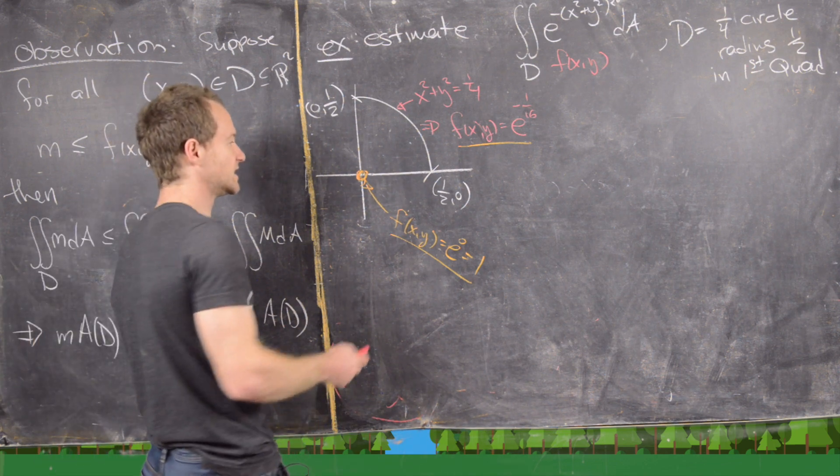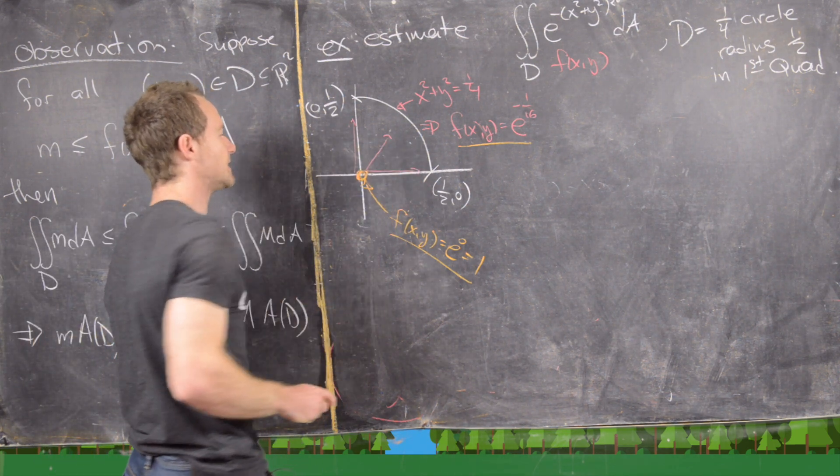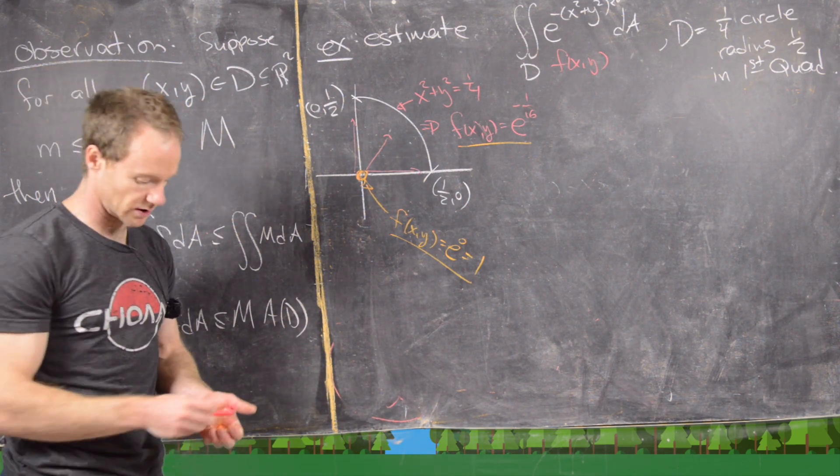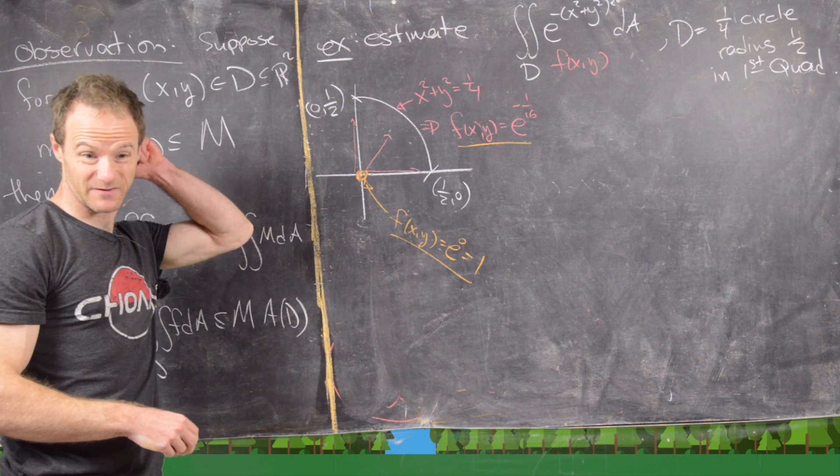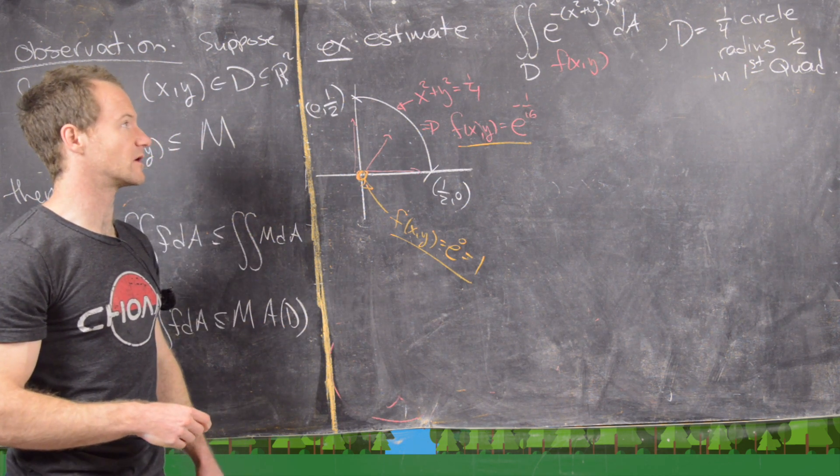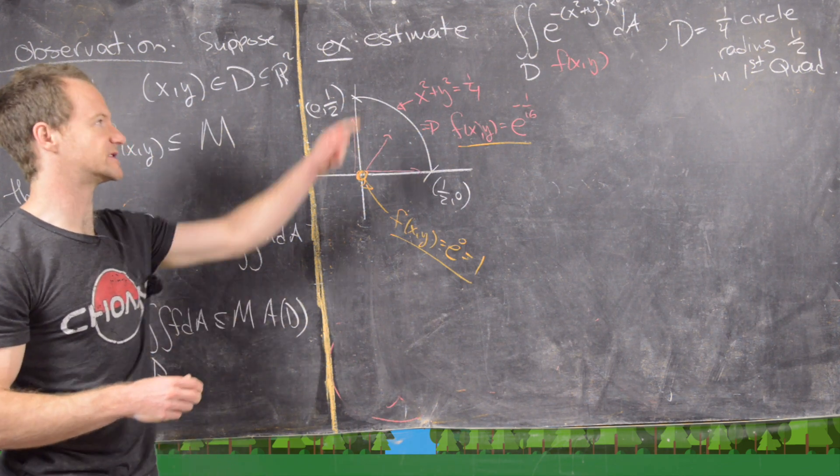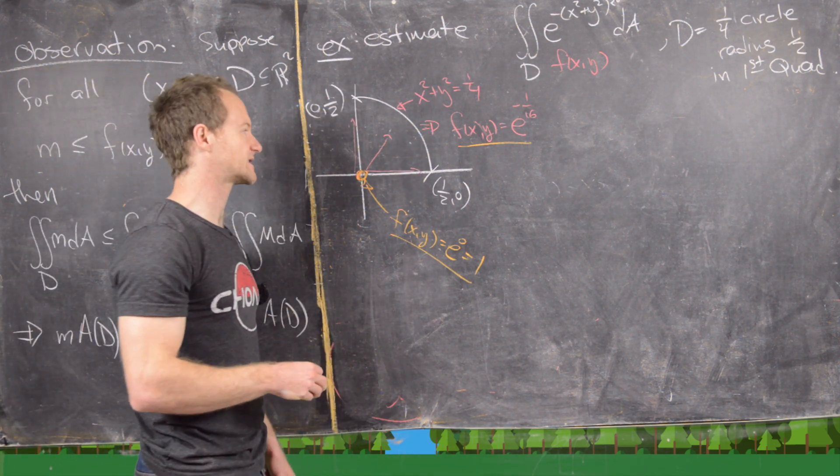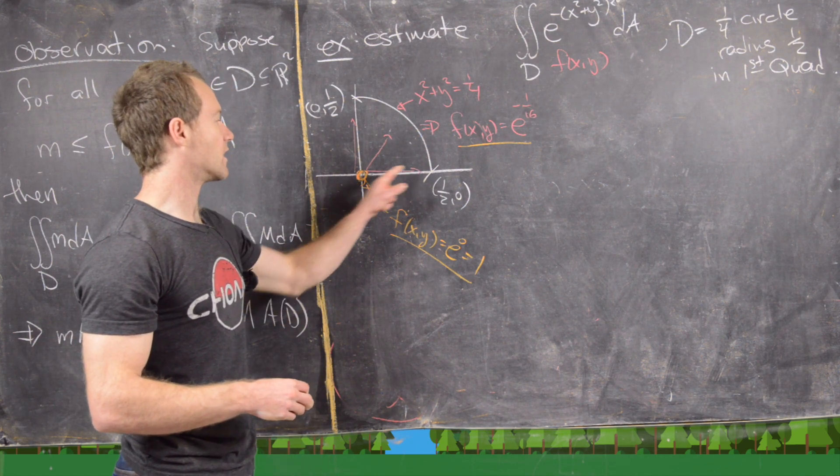And now notice, as we go in this direction, this direction, and this direction, the function is just getting smaller. So you can check this using the first derivative test and everything to do with the extreme value theorem. But I'm not going to do that. That's actually pretty easy to do in this case.